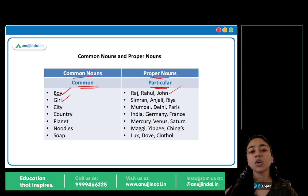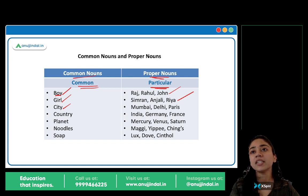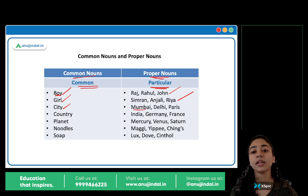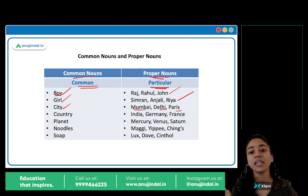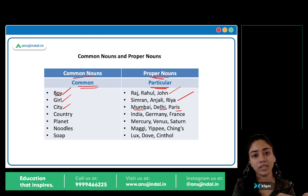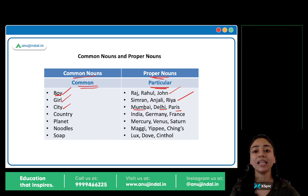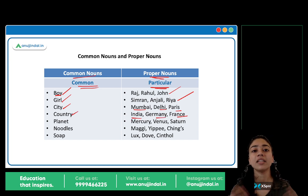Same with girl — girl or woman is a common noun. But Simran, Anjali, Riya, Preeti — these are all proper nouns with specific, particular names. Same with city — city is common. When I say city, I could mean any city. But if I say Mumbai, Delhi, or Paris, I am talking about a specific city — one is Mumbai, one is Delhi, one is Paris. Country bhi common hai, lekin India, Germany, France — yeh proper nouns hain. Specific naam hain.